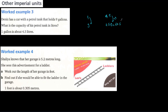The last exercise: Shalia knows her garage is 5.2 meters long. She sees an advertisement for a ladder and needs to find the length of her garage in feet to see if the ladder will fit. The conversion is 1 foot equals approximately 0.305 meters. Since 5.2 meters is bigger, we divide 5.2 by 0.305 to find how many feet it is.